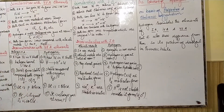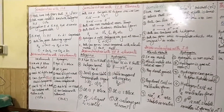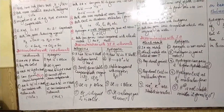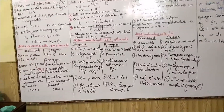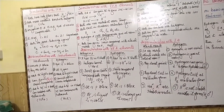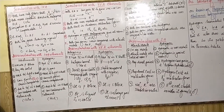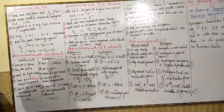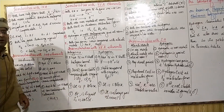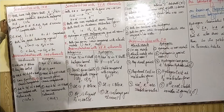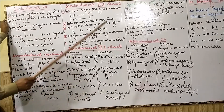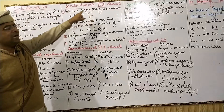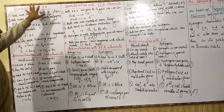Hydrogen is always in gaseous form, but some halogens like bromine are liquid and iodine is solid at room temperature. These are the differences from Group 7A. So far we have studied that hydrogen shows similarities and differences with both 1A and 7A. Now we will study its similarities with Group 4A elements.